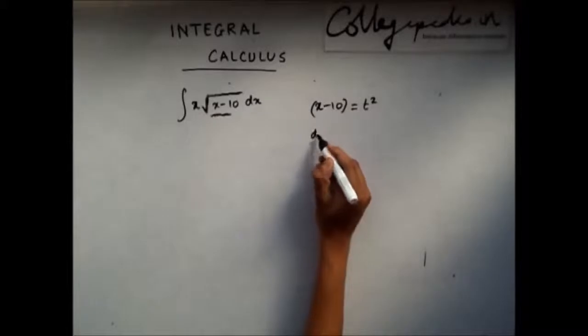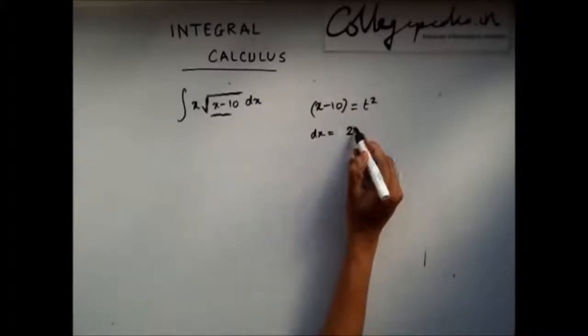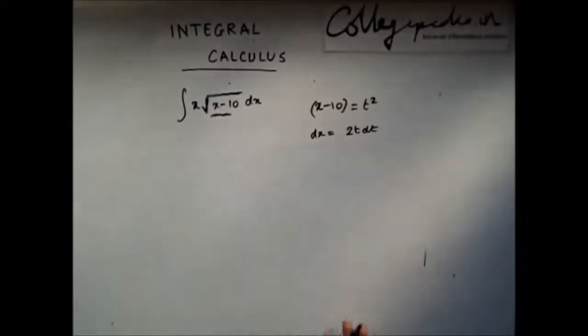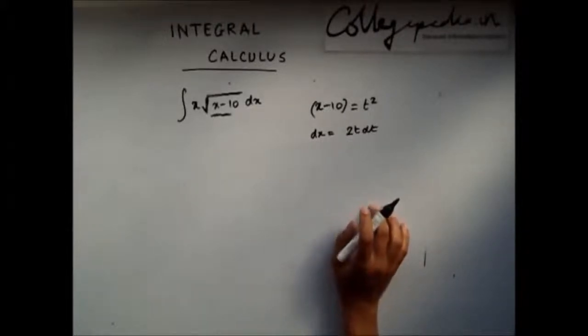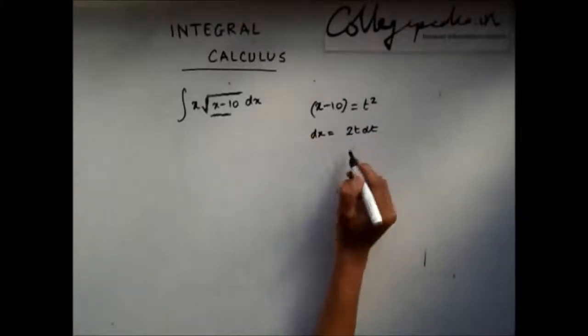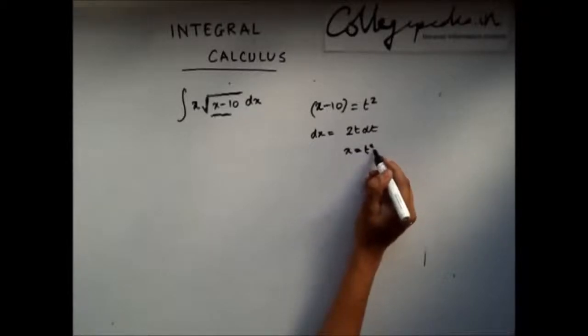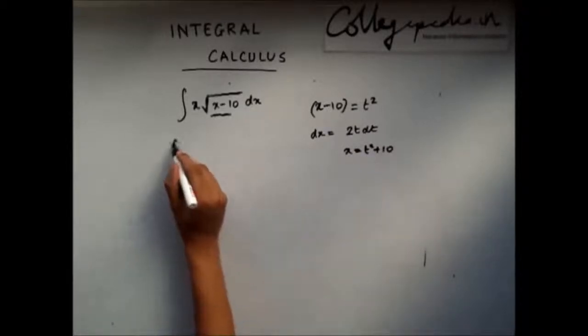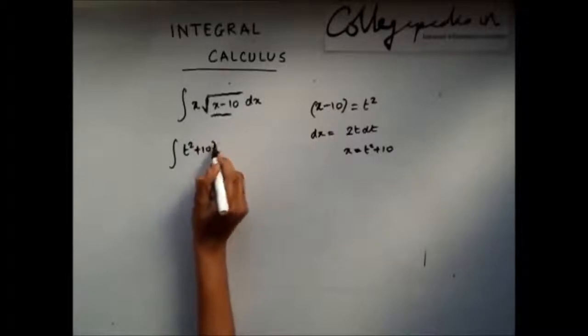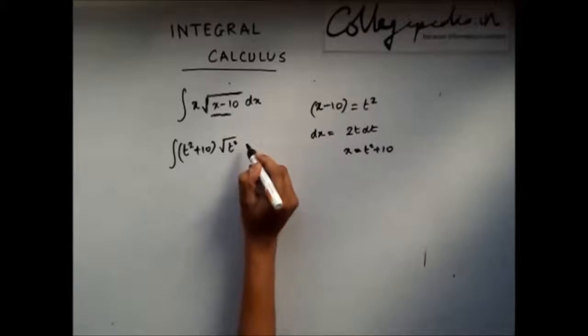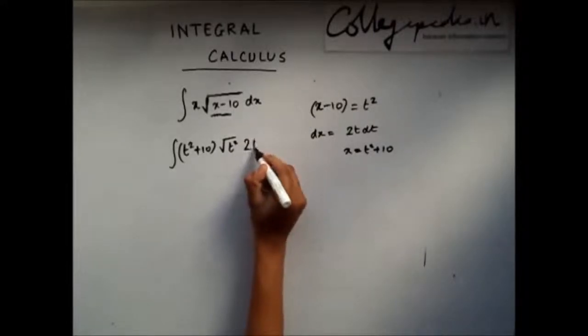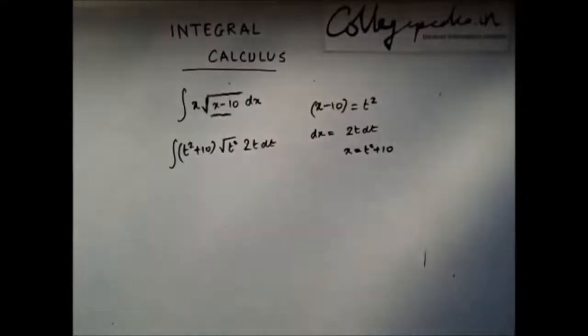dx becomes 2t dt. Now, replace x with t square plus 10. This becomes t square plus 10, root under x minus 10 becomes root under t square, and dx becomes 2t dt.